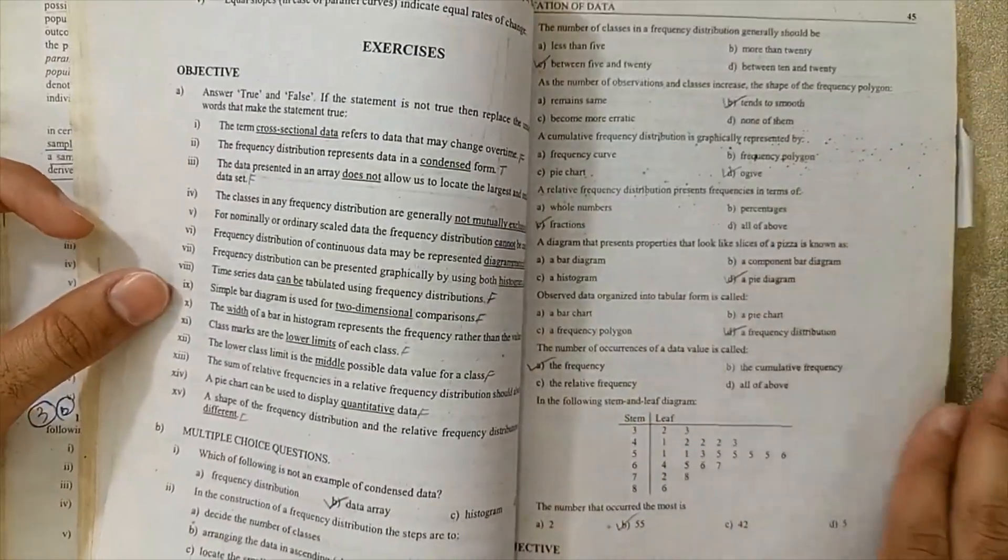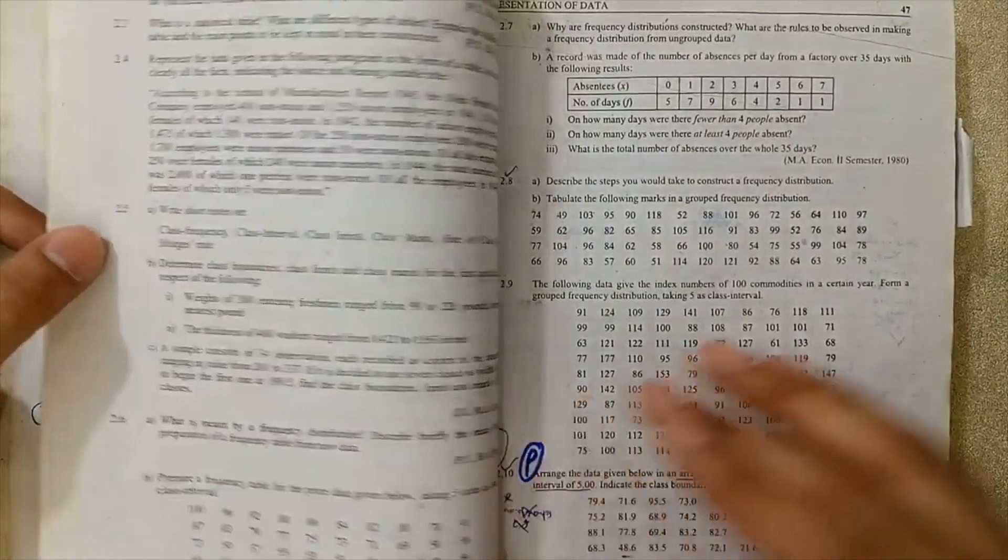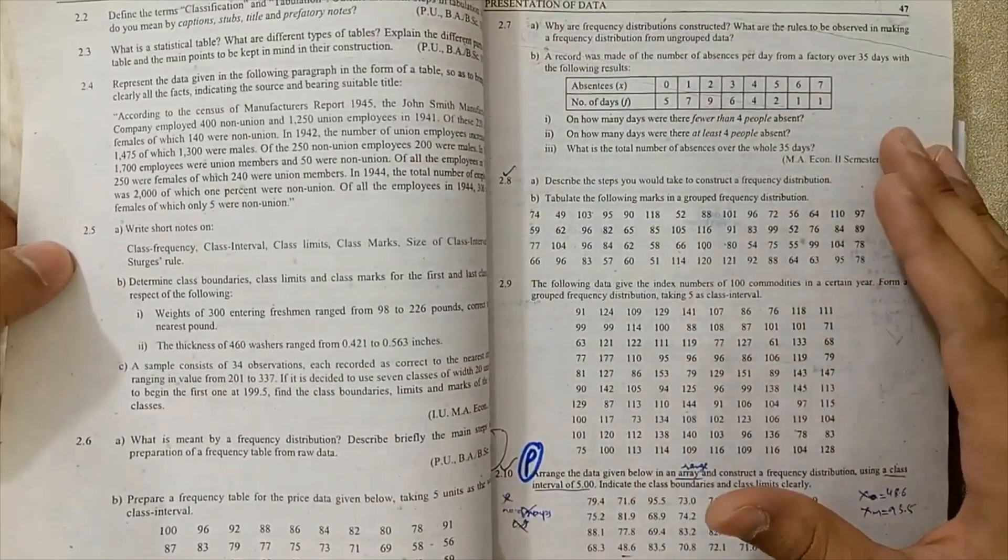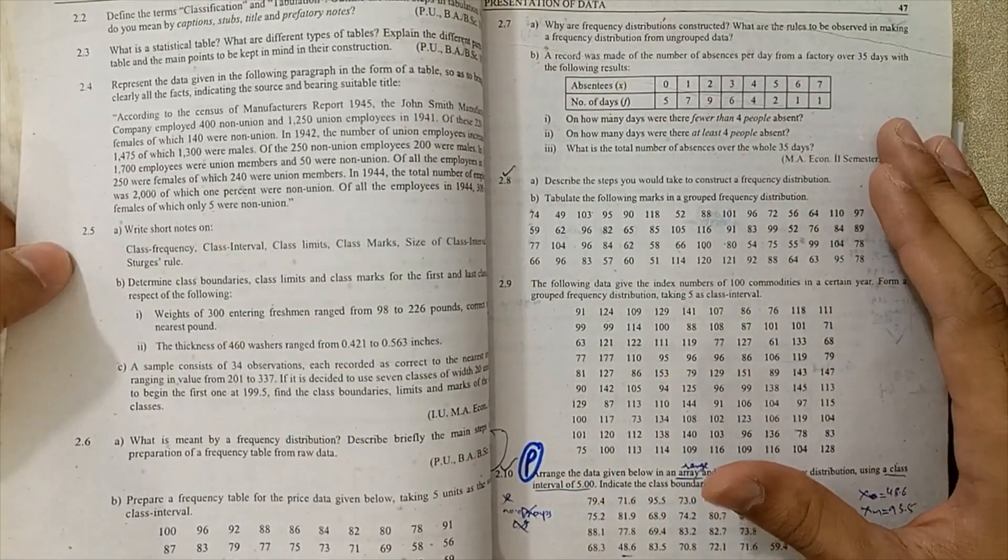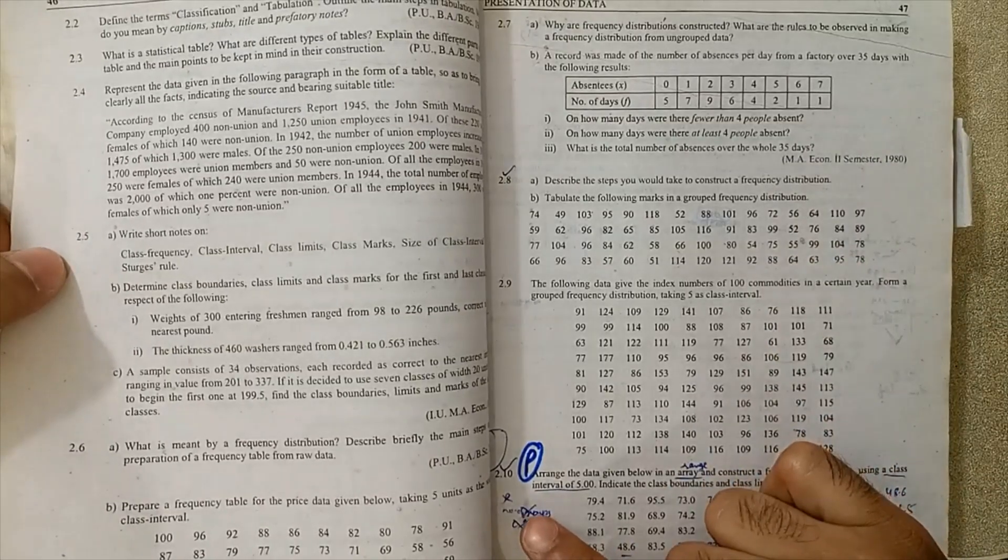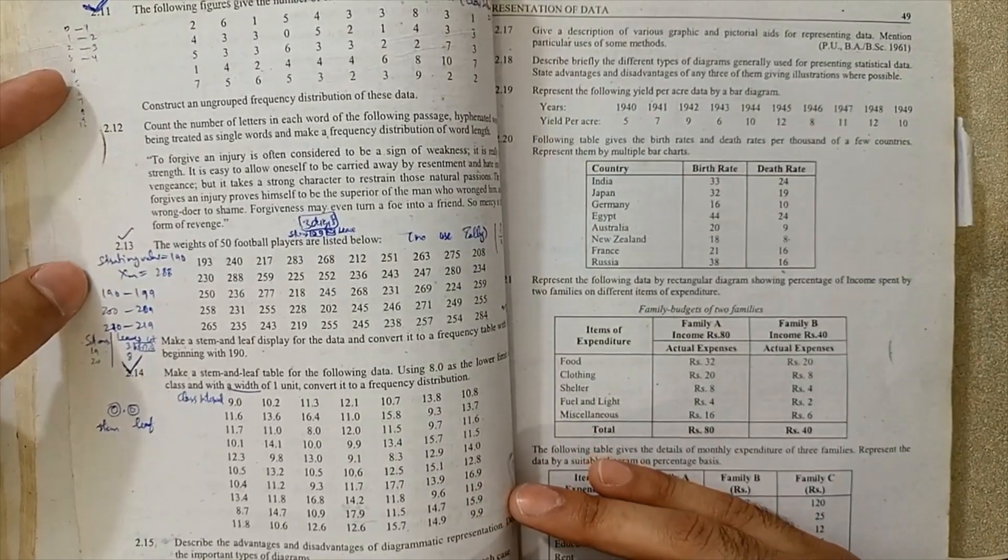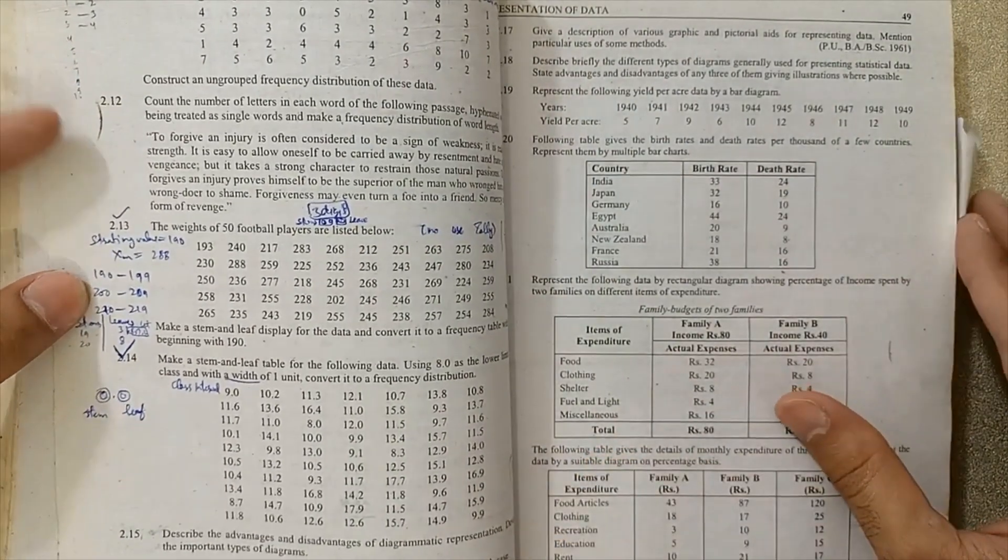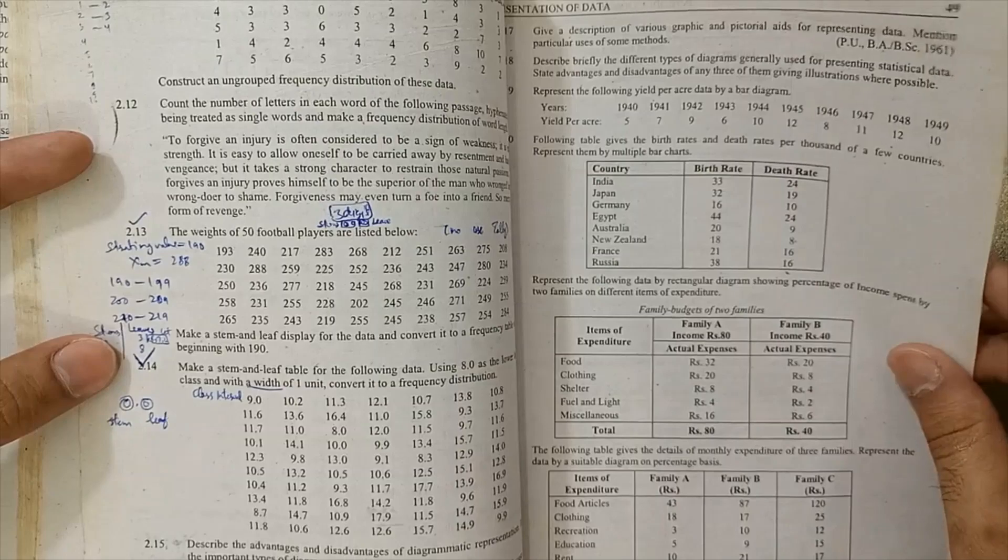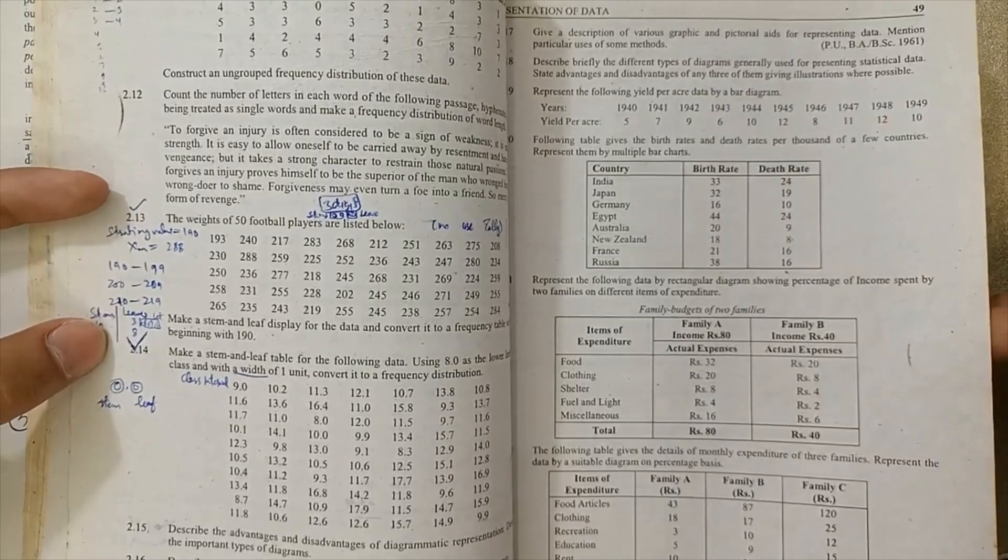Now I'm going to discuss this problem, which is very important. This example is on page number 47. Question number 2.10 is very important, and next 2.11 is very important, and next we have here 2.14, 2.13, and these questions are very important.